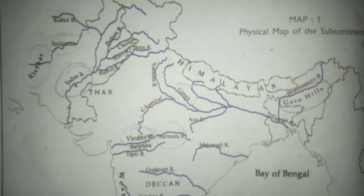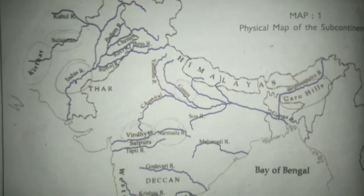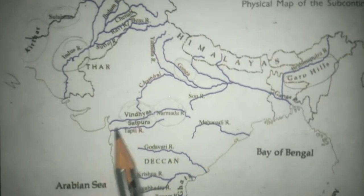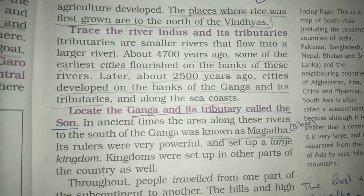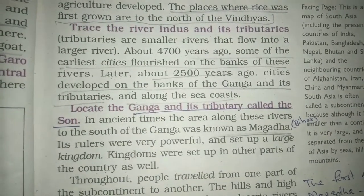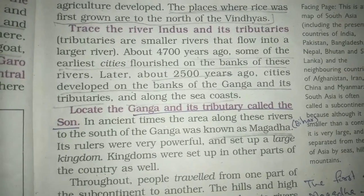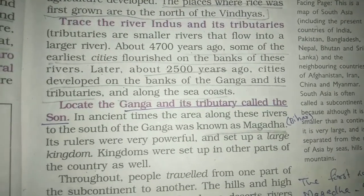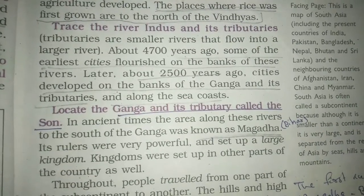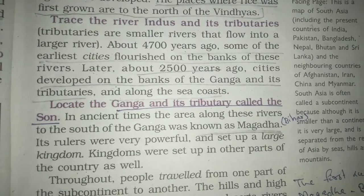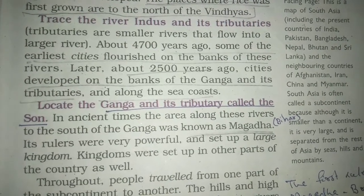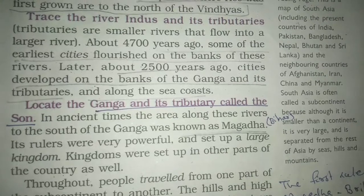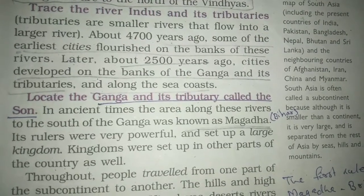Some of the earliest cities flourished along the banks of the Indus and its tributaries — this is called the Indus Valley Civilization, around 2500 years ago. Cities and civilization also developed along the banks of the Ganga and its tributaries.